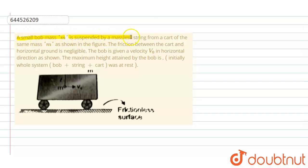is suspended by a massless string from a cart of the same mass m, as shown in the figure. The friction between the cart and horizontal ground is negligible. The bob is given velocity v naught in horizontal direction as shown. The maximum height attained by the bob is: